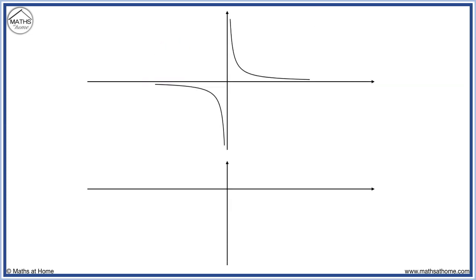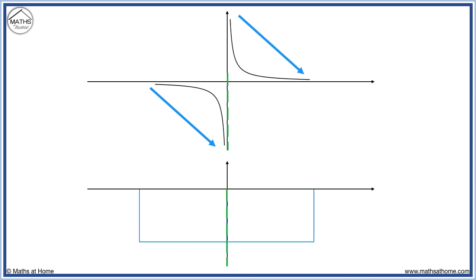On this graph, we have an asymptote on the y-axis, so we therefore have an asymptote directly below on the derivative. There are no turning points to mark. Before the asymptote, the graph is decreasing. After the asymptote, the graph is also decreasing. Therefore, our derivative will be below the x-axis on both sides of the asymptote.